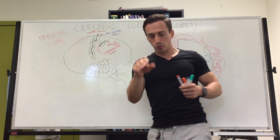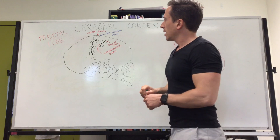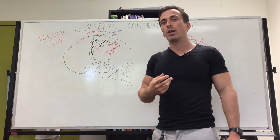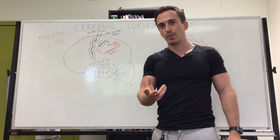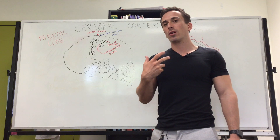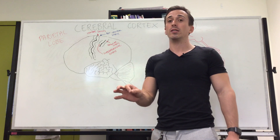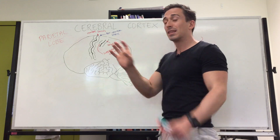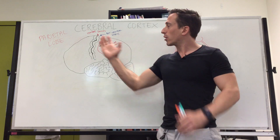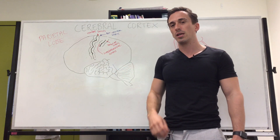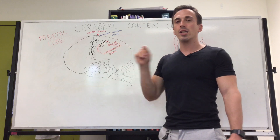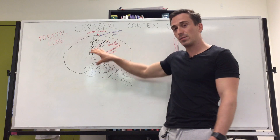The supramarginal gyrus and angular gyrus are important for language. Damage to these areas can manifest in several ways: an individual can forget what word to use, which is called anomia; it can also result in issues with reading and writing, known as alexia and agraphia; and difficulty selecting the right word to use in a sentence. Importantly, this applies predominantly to the left hemisphere, since language is largely lateralized to the left.